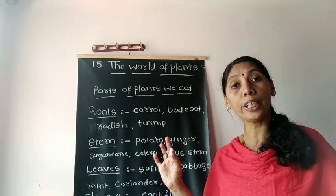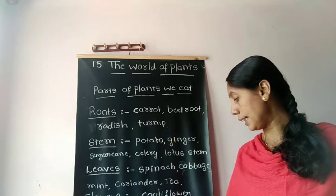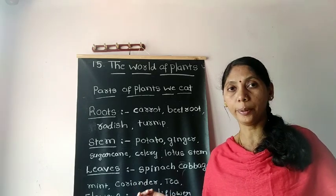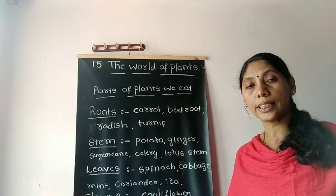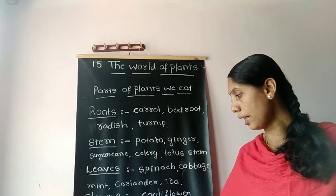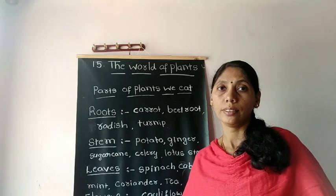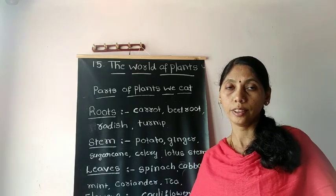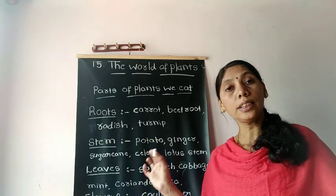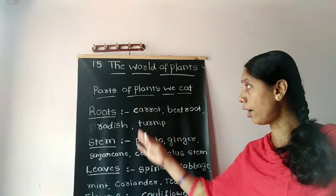Seeds are our main food. Next, cereals and pulses — daily we eat rice, we eat ragi. Pulses like chickpea, kidney beans, black gram, red gram, etc. — these are all our main food. And coffee: we drink coffee, and coffee beans come from coffee plants. Coffee beans are seeds of the coffee plant. These are all the parts of the plant we eat.